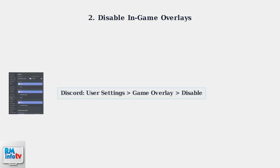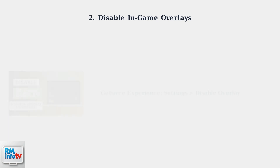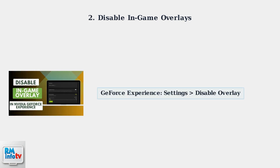For Discord, go to User Settings, then Game Overlay, and disable the In-Game Overlay feature. Finally, disable the GeForce Experience Overlay in the Settings menu if you have an NVIDIA graphics card.